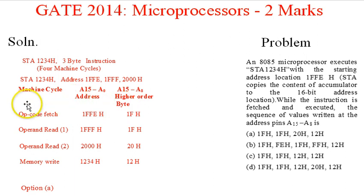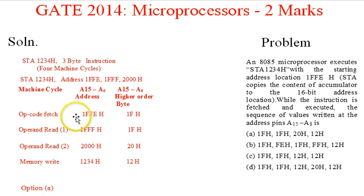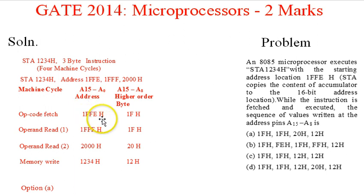Looking at the table, the machine cycles involved for this instruction are: first, opcode fetch; second, operand read 1; third, operand read 2; and fourth, memory write. These are the 4 machine cycles of the instruction. Starting with the opcode fetch, the address is the starting address 1FFEH in hex.